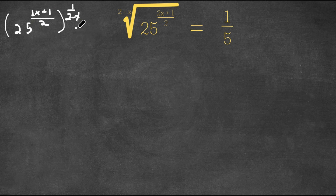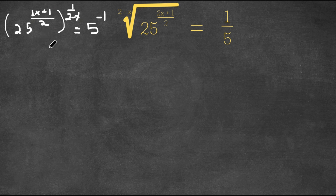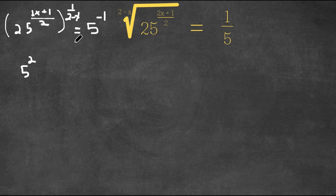I'm going to rewrite 1 fifth as 5 to the power of negative 1. Now I'm going to rewrite 25 as 5 squared, and I'm doing this so that we can have the same bases on both sides. Now I have a base of 5.